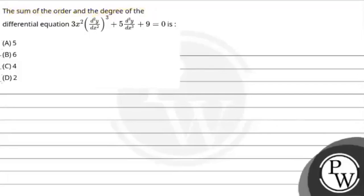Hello Bacho, let's read the question. The question says: the sum of the order and the degree of the differential equation 3x squared multiplied by the whole cube of 3 squared d²y/dx² plus 5 multiplied by d³y/dx³.